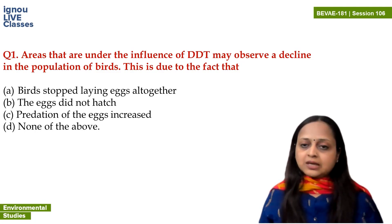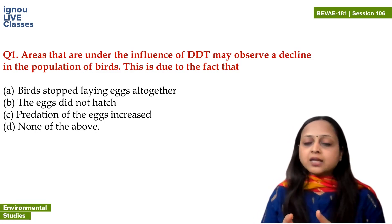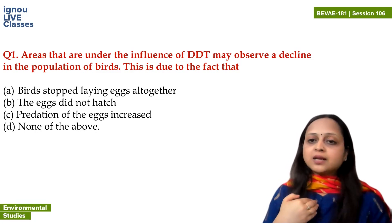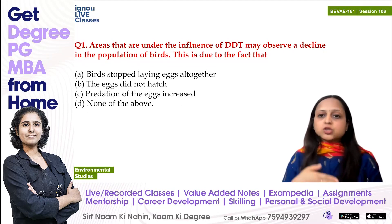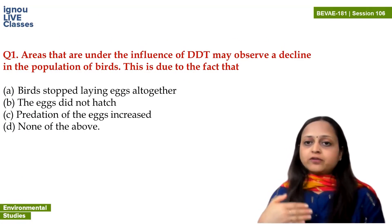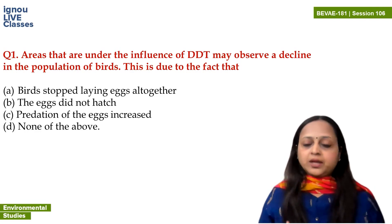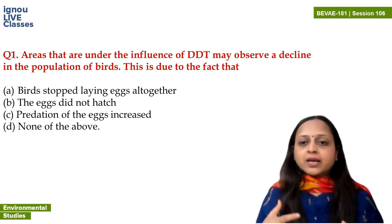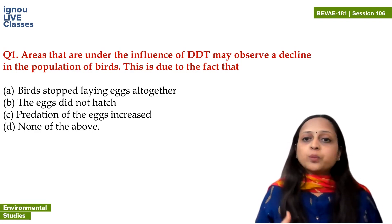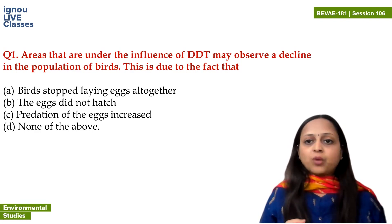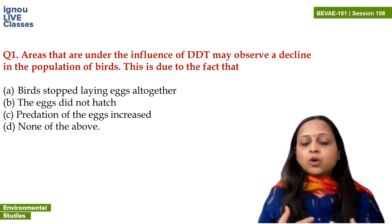In one of the previous sessions, we already discussed biomagnification — it means the concentration keeps increasing. If there is DDT in water, the food chain will increase its concentration at each level. DDT is not metabolized, so if it enters our body, it accumulates slowly. DDT definitely affects us.